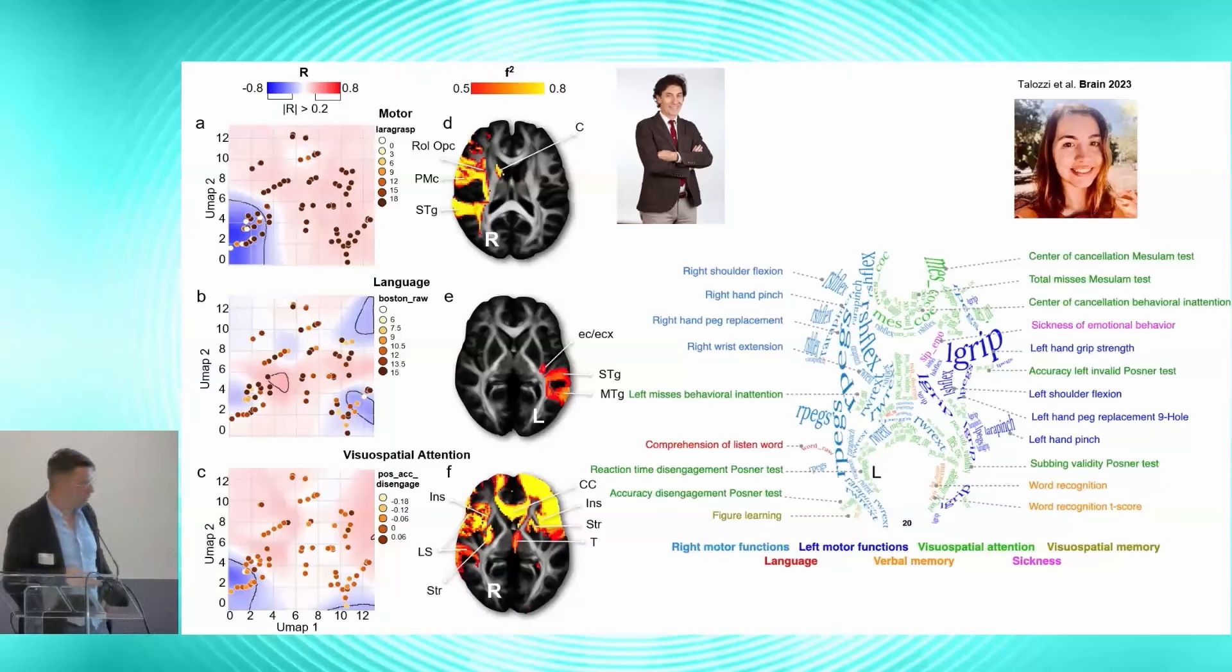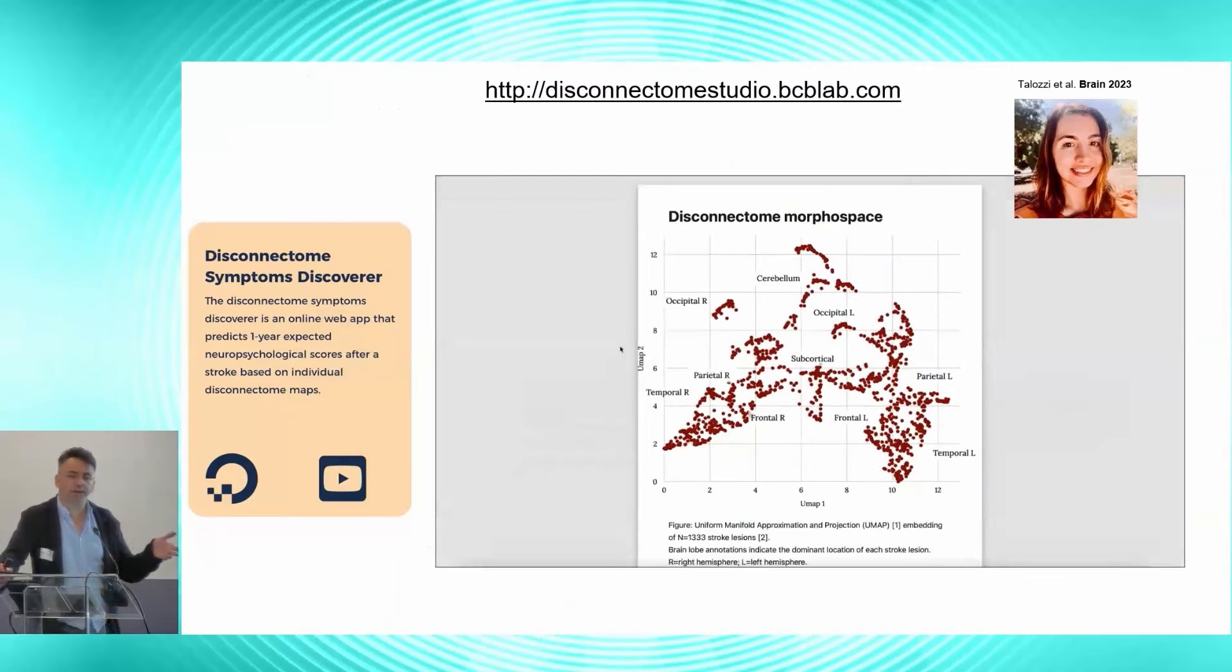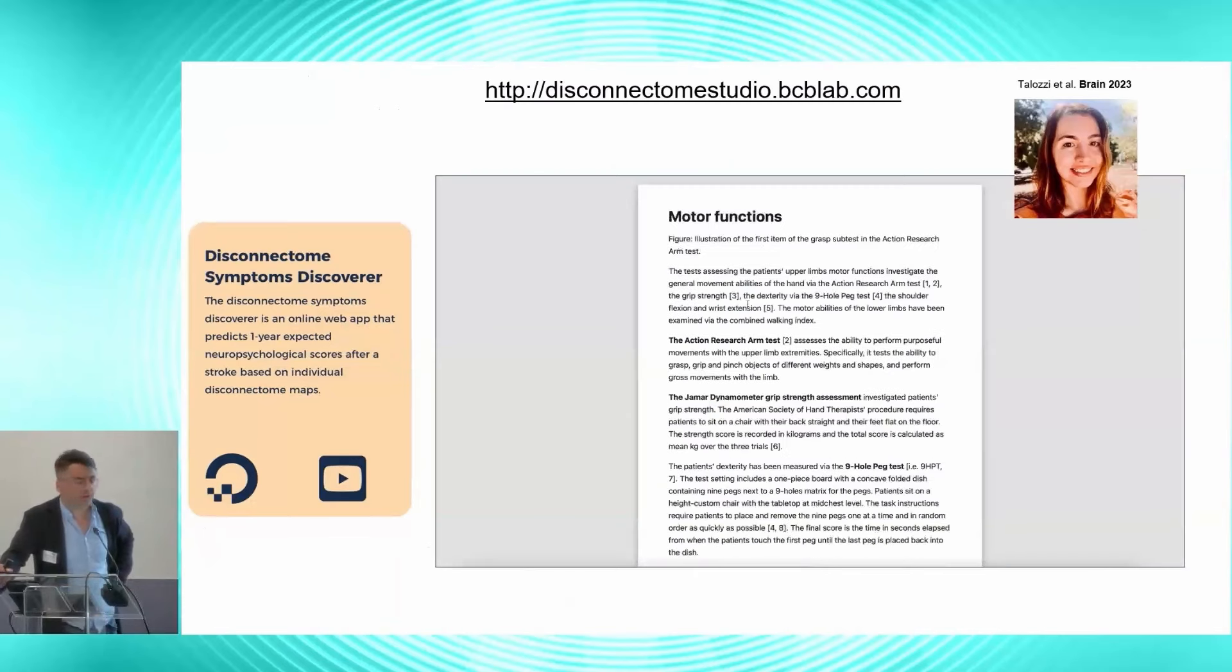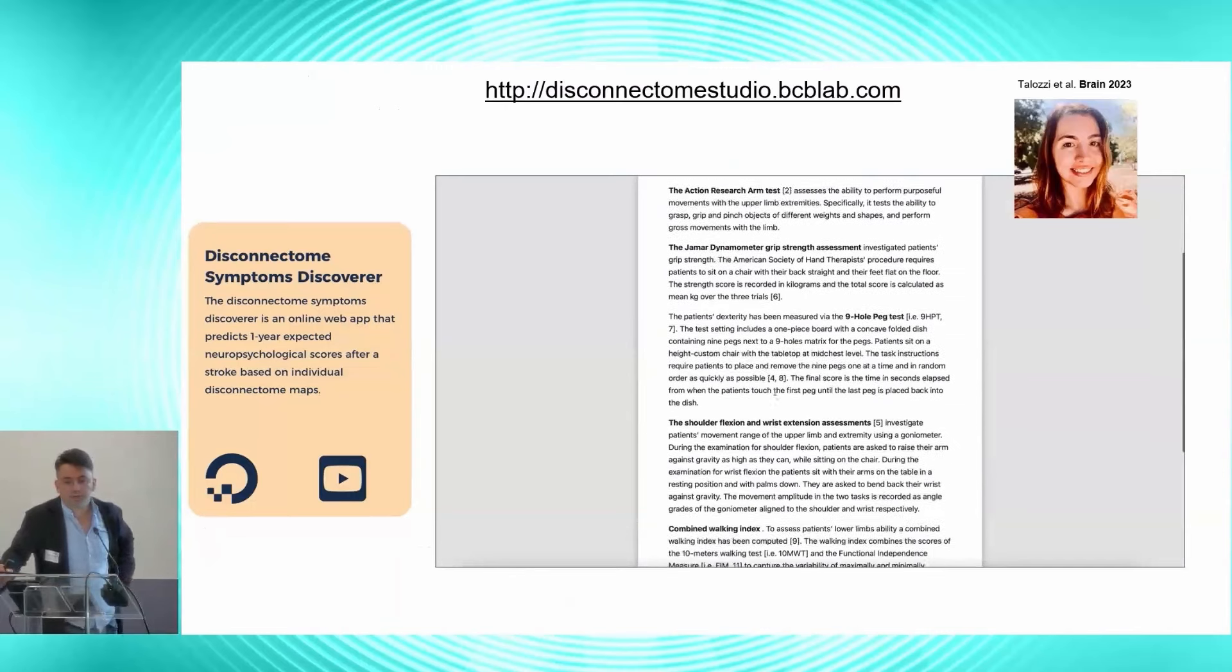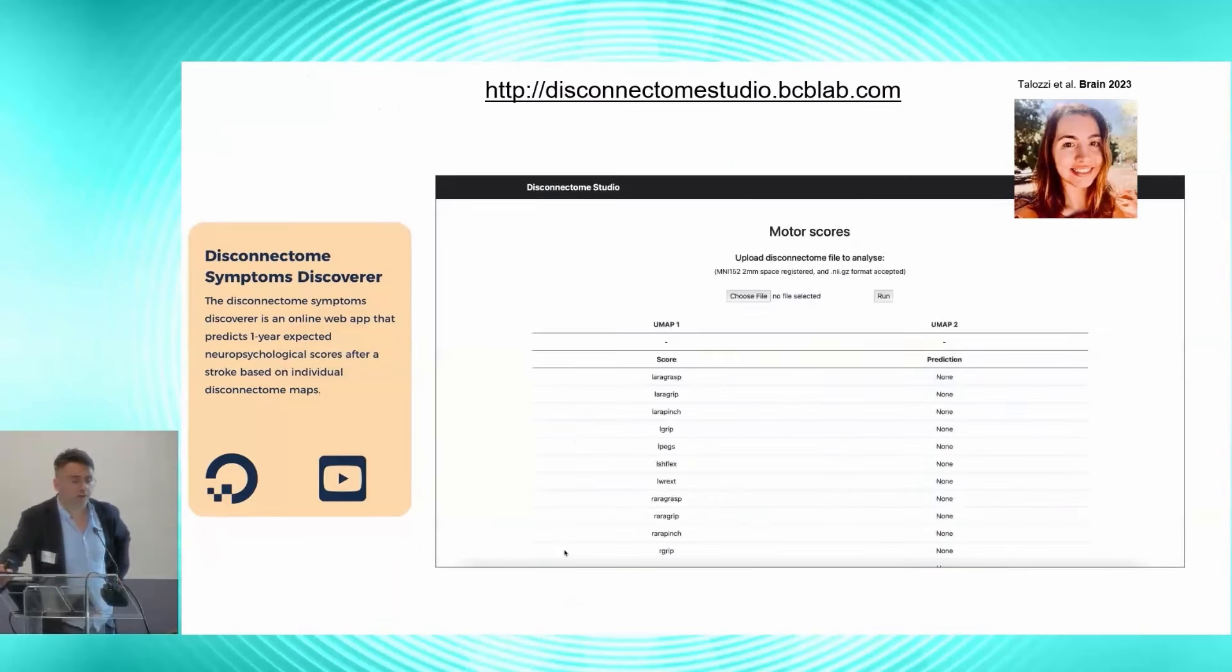And so we repeated that for 88 scores of neuropsychology and start projecting the top significance onto the white matter and creating those maps of symptoms emerging after the disconnection of given tracks. So we could add the disconnectome symptom discoverer because the predictions that we do are for patients one year after their lesion. And we did that because we saw it was convenient to know as soon as the patient come to the hospital whether they will recover or not for language or motor impairment.